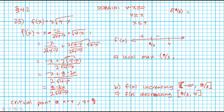f of 8 thirds is 8 thirds times the square root of 4 minus 8 thirds, which is 8 thirds times the square root of 4 is 12 thirds minus 8 thirds.